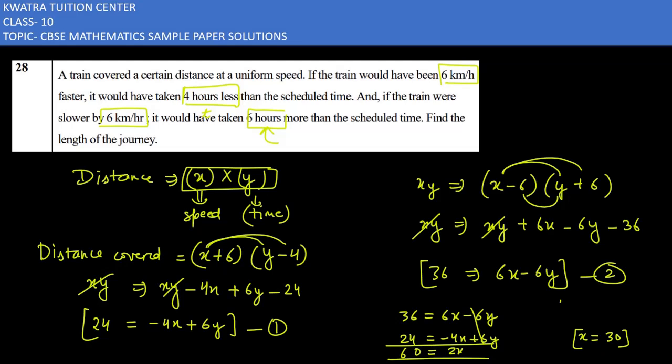And the value for y, what will be the value for y? You have to put the value of x in first equation or the second equation, you will get the value of y. So let's put it in first equation: 24 minus 4 into 30 plus 6y. Minus 4 into 30 is 120. 24 plus 120 is equal to 6y. Adding 24 and 120 will give you 144, and dividing it with 6: y is 144 divided by 6. So I can cancel it and will get the value of y as 24.